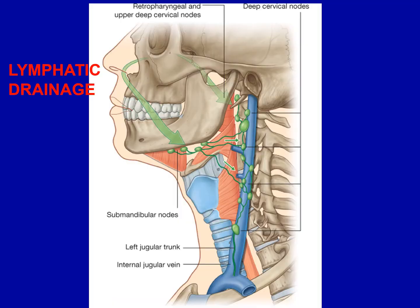The lymph from the anterior part of the nose drains into the submandibular group of lymph nodes, whereas lymph from the posterior part of the nose drains into the retropharyngeal group of lymph nodes.